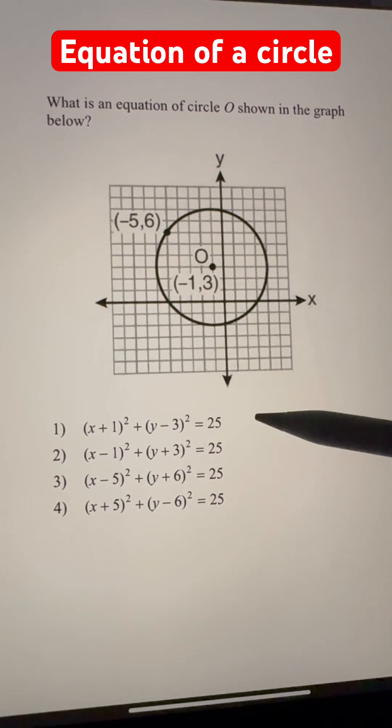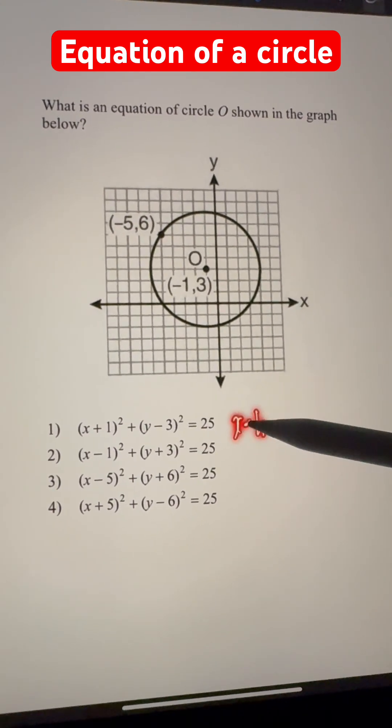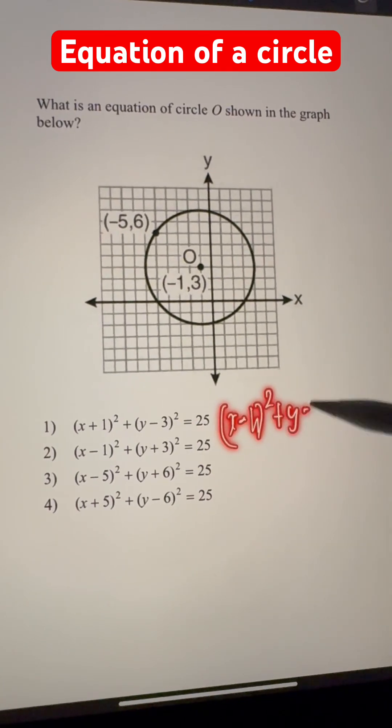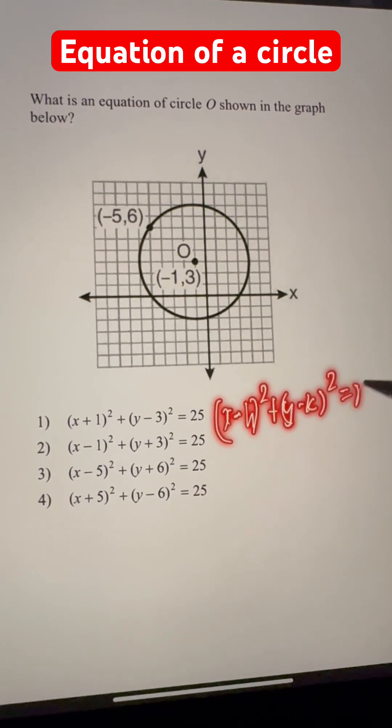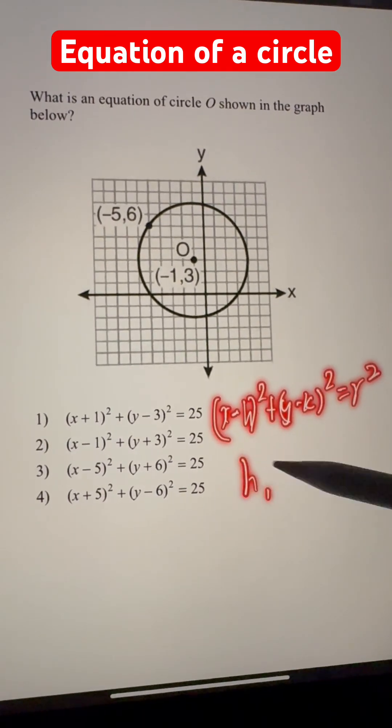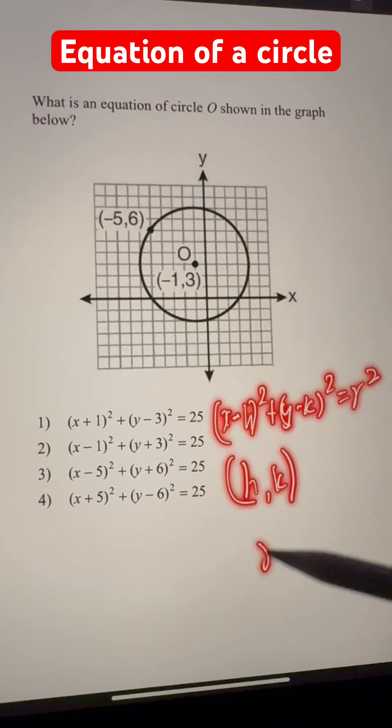First thing we can know is that the general formula of a circle: (x - h)² + (y - k)² = r². Where (h, k) is the center of the circle and r is the radius.